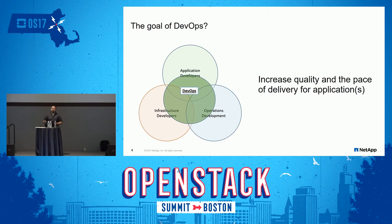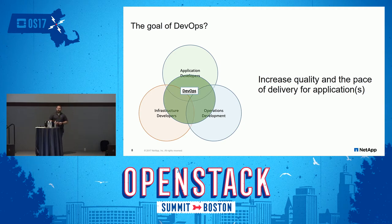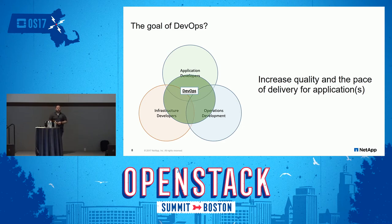There are three types of people we think of as developers. Application developers, who are actually writing applications and are closely aligned with a business unit. Infrastructure developers, who automate against storage systems, networks, or servers. And operations development — a DevOps team — responsible for automating the interaction between applications and the underlying infrastructure: abstracting storage, network, and compute and offering that up as a service.